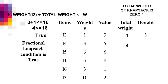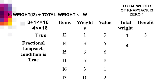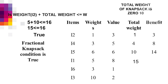Item 2 gives a profit of 3. Next we add item 4 — total weight becomes 4 (that is 3 plus 1), which is less than the maximum weight, so we add it. Total benefit is 8. Next item is 5 — total weight becomes 10 (6 plus 4), less than maximum weight, so we add it. Benefit becomes 15. Next is item 1 — total weight becomes 15 (10 plus 5), less than maximum weight, so we add it. Benefit is now 22.